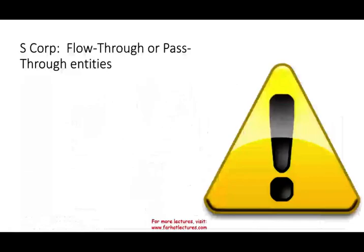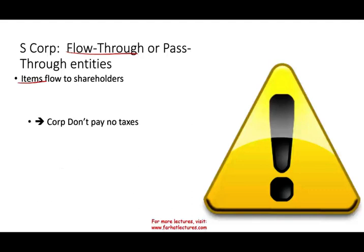Today we're going to talk about S-Corporation Special Taxes. We have to remember that S-Corps are flow-through entities or pass-through entities. What does that mean? It means they don't pay taxes — income and deductions flow to the shareholders, and the shareholders pay the taxes. So the S-Corp, the corporation itself, doesn't pay any taxes.